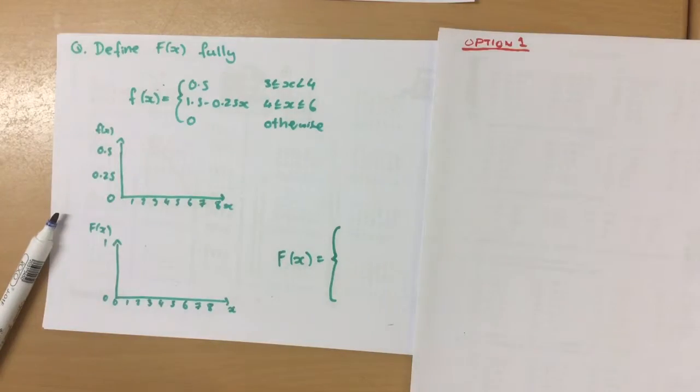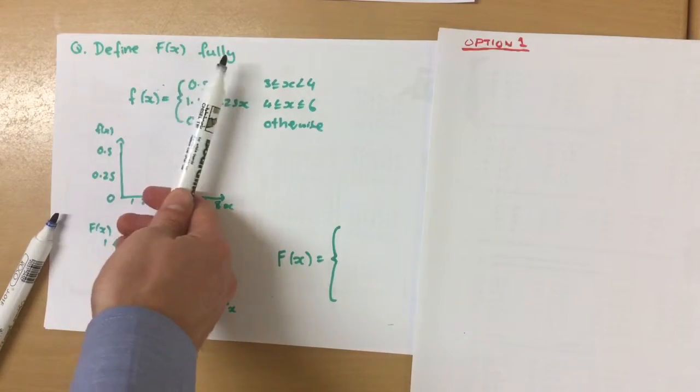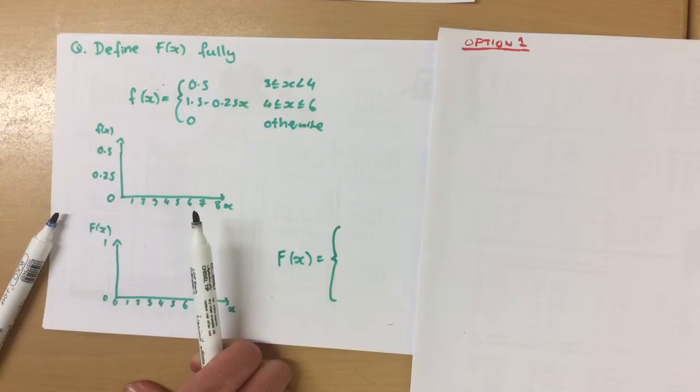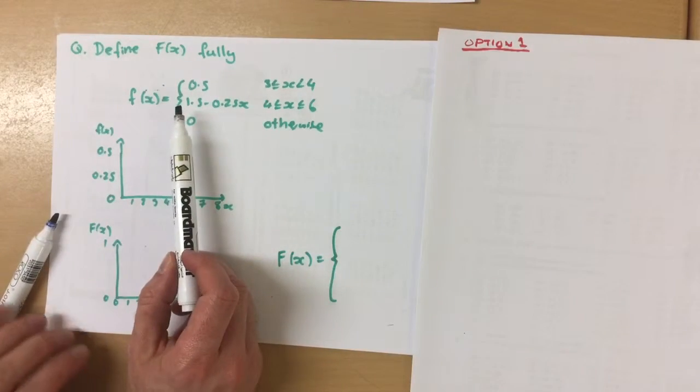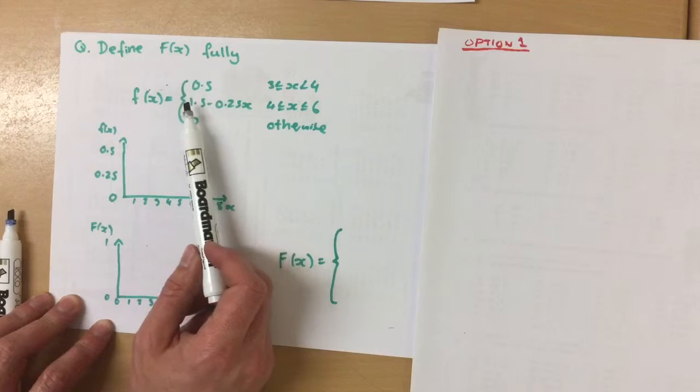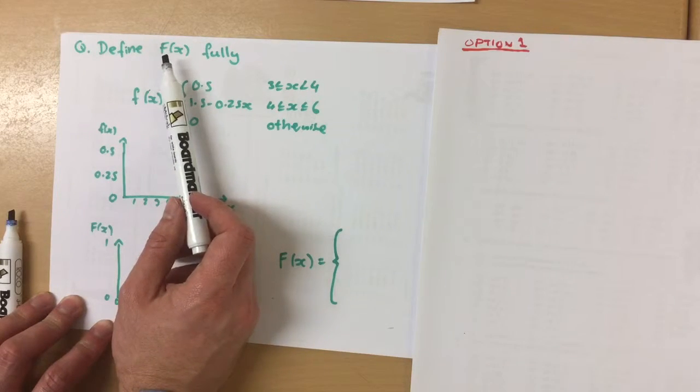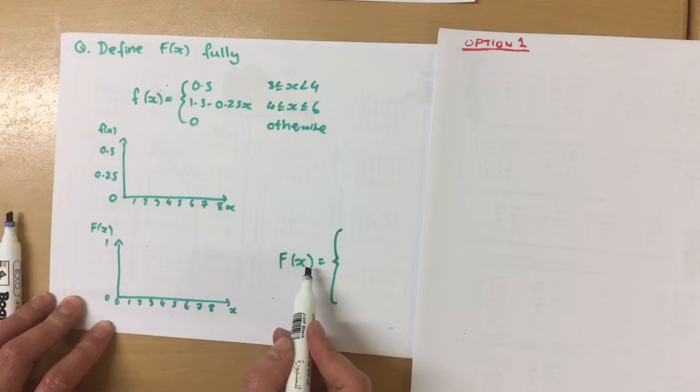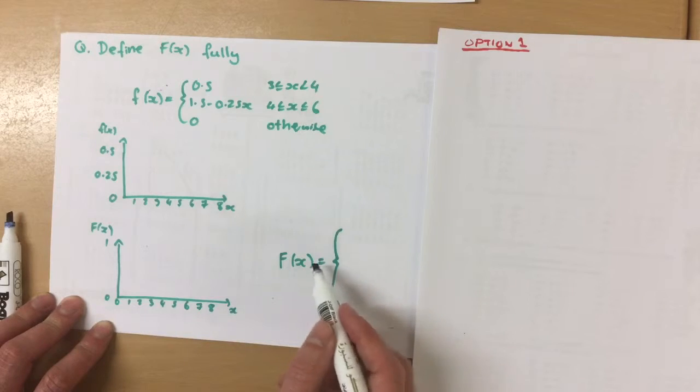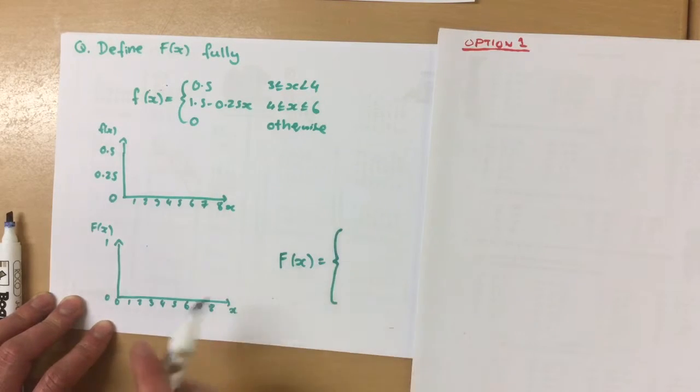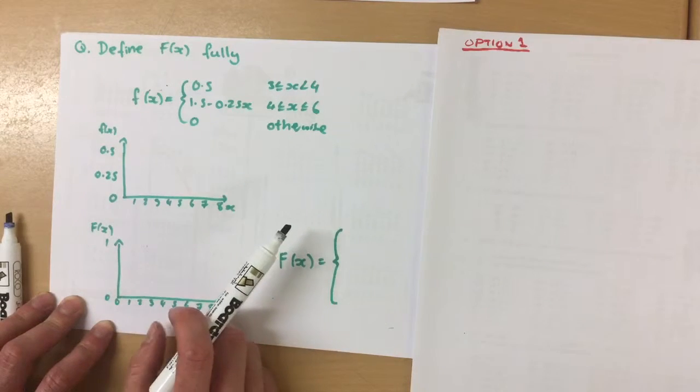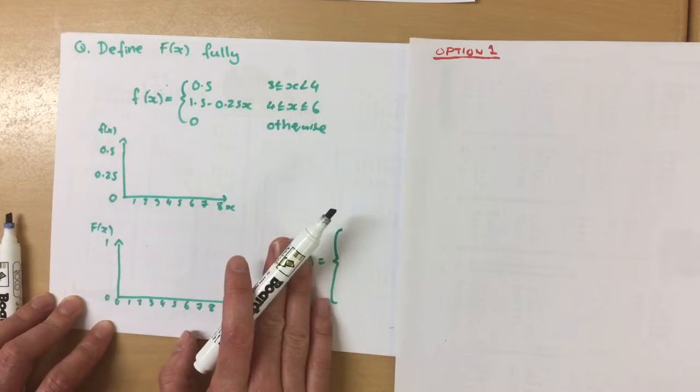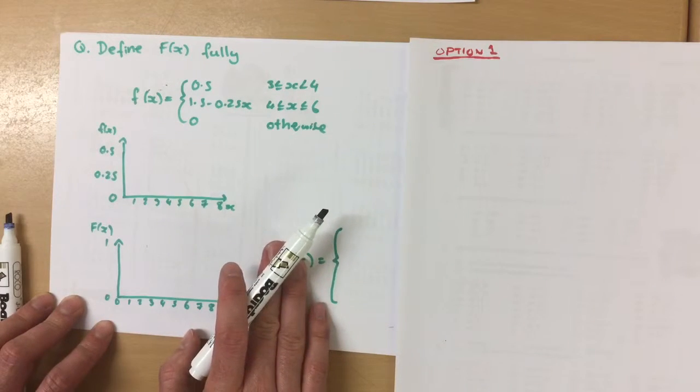So we've been asked to define the cumulative distribution function fully. We've been given this piecewise function, or the probability density function. Now remember that we were told that it is the area under this curve that gives us the cumulative distribution function. So we're going to end up with the values of different ranges based on this integration. There's two ways to do this, two options. We'll do both, maybe in separate videos, and it's up to you which one you choose, but you need to know or understand both of them.